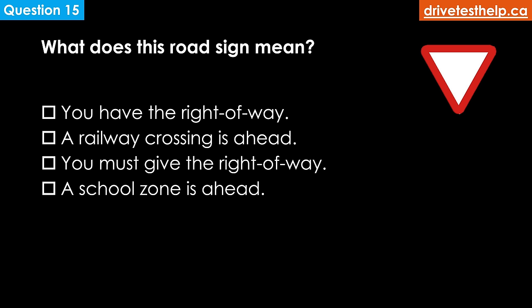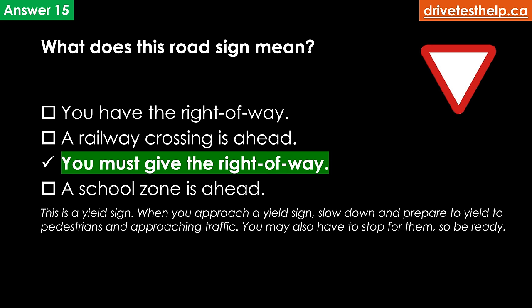What does this road sign mean? Options: you have the right of way; a railway crossing is ahead; you must give the right of way; a school zone is ahead. The correct answer is you must give the right of way. This is a yield sign. When you approach a yield sign, slow down and prepare to yield to pedestrians and approaching traffic — you may also have to stop for them, so be ready.